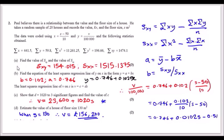Part a asks for Sxy and Sxx. The formula for Sxy is given in the formula book. Plug in the sum of xy = 1474, along with the sum of x and sum of y, dividing by n = 20. For Sxx, use the sum of x² minus (sum of x)² / n to get the required results.